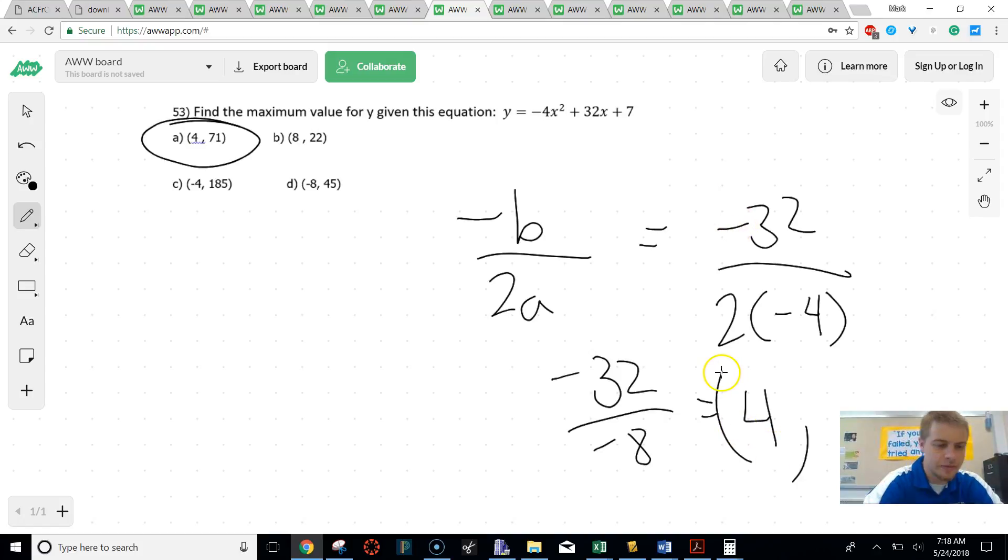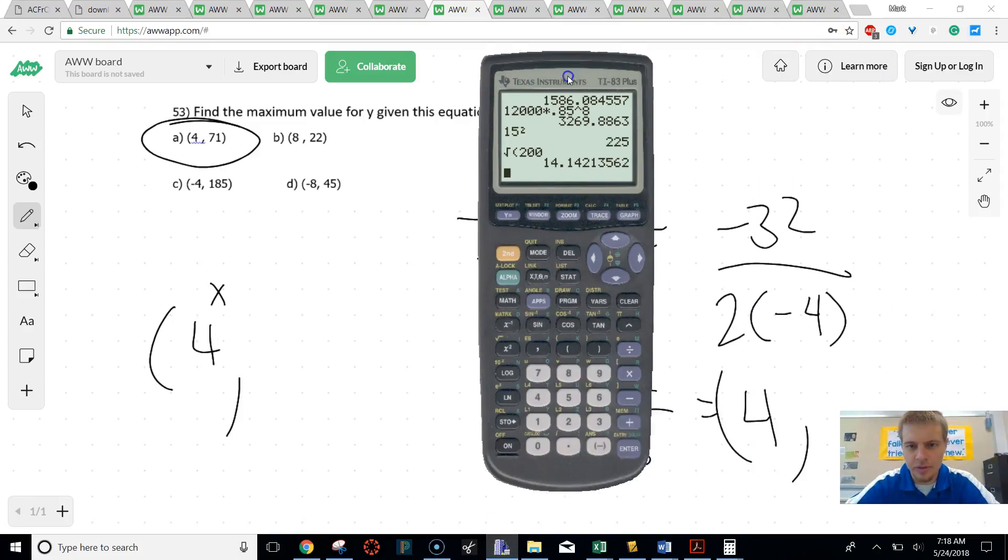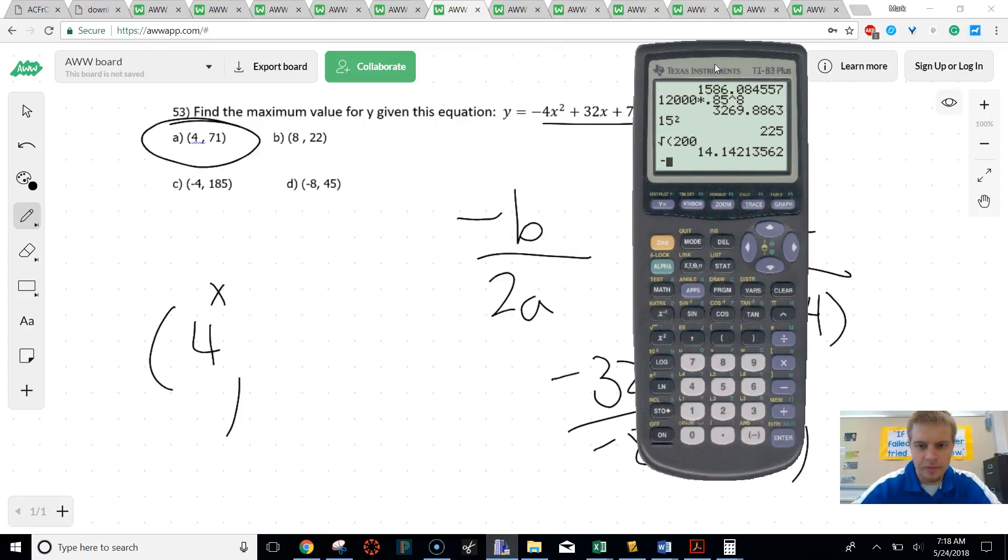But we're going to double check to see if that's really the right answer. So if you have an x value, how you find a y value is you plug it into this thing. To save me time, I'm just going to plug that whole thing in my calculator. So I'm going to say negative 4, 4 squared plus 32 times 4 plus 7, and that is going to give me 71.